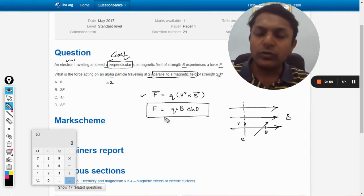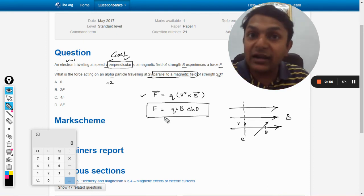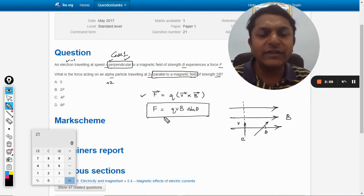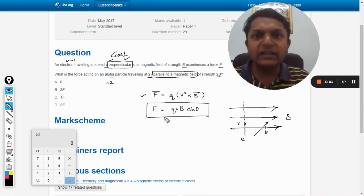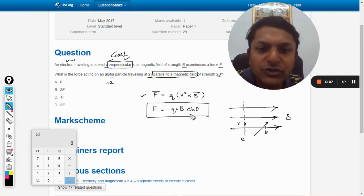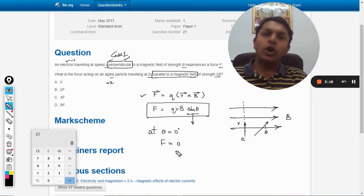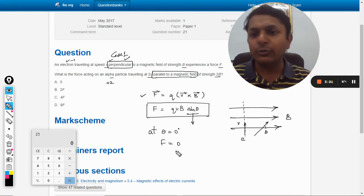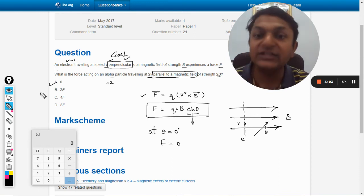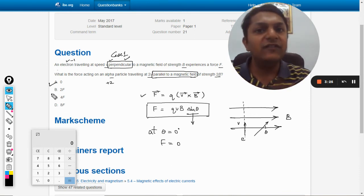Now in case number two, when the alpha particle is moving parallel to the magnetic field, I can always say that the angle between velocity vector and the magnetic field vector will be zero. So I will substitute this in our formula. So sin 0, we know, will become zero. So at θ equals zero degrees, we can say that the force being acted on the charged particle will come out to be equal to zero. So our answer will be A, just because the alpha particle is moving parallel to the magnetic field.